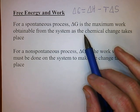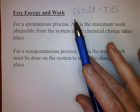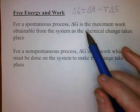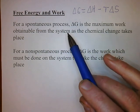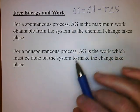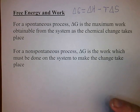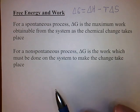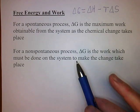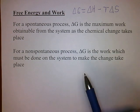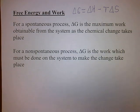For a spontaneous process, that's where delta G is negative. Delta G represents the maximum work obtainable from the system as the chemical change takes place. For a non-spontaneous process — where delta G is positive — this represents the work that we would have to put in to make the change take place.